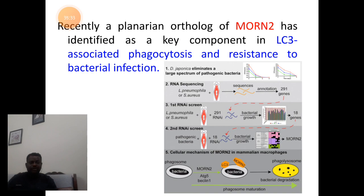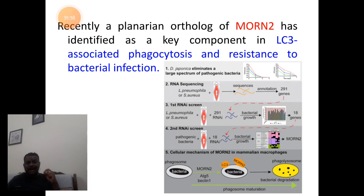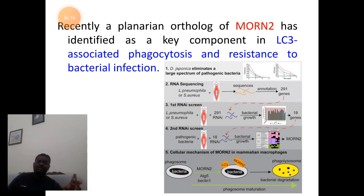Some adult stem cells are present for the process of regeneration to occur in planaria along the anteroposterior axis. They are responsible for resisting bacterial infections. There are certain genes that scientists have studied called MON2 genes, related to phagocytosis and resistance to bacterial infection. The resistance to bacterial infection is brought about by MON2 genes through the gene silencing process. Gene function is studied by the gene silencing process.